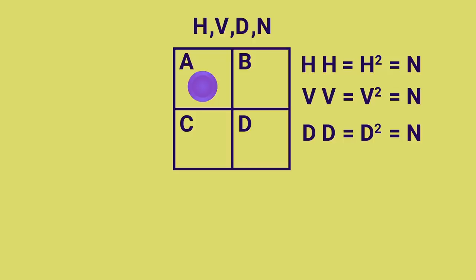Then the next thing to notice is that any two different moves yields the third if we ignore N. So like a horizontal move, then a vertical move is the same as just a diagonal move, which can be written like this. It's easy to see this is true for any combination of moves, and by the way, flipping the order of these doesn't matter.